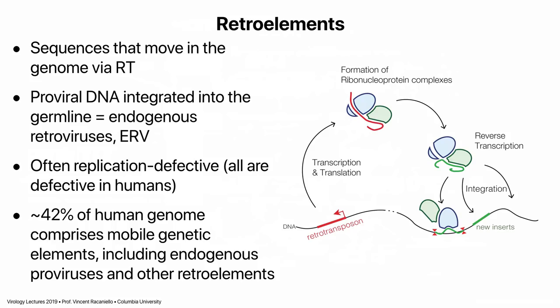Our genome is full of these, but also full of a broader class called retro-elements — sequences that move around the genome via reverse transcription. A retro-element starts as RNA; if it has its own reverse transcriptase, the RNA is reverse transcribed to make DNA, which then integrates somewhere else in the genome. These are mobile genetic elements that are RNA-based and require reverse transcriptase to move around. This is called a copy-and-paste mechanism — copying the sequence and pasting it somewhere else.